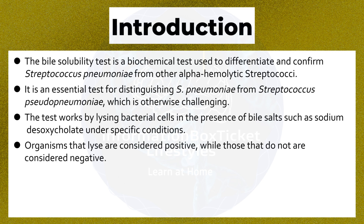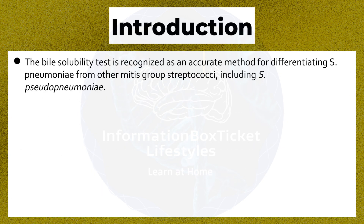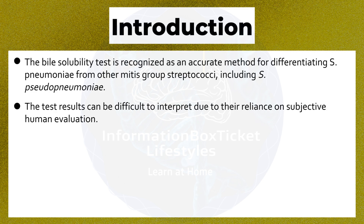Organisms that lyse are considered positive, while those that do not are considered negative. The exact mechanism of the test is not clearly understood, but it is hypothesized that lysis occurs due to the induction of autolytic enzymes. The Bile Solubility Test is recognized as an accurate method for differentiating S. pneumoniae from other mitis group streptococci, including S. pseudopneumoniae. The test results can be difficult to interpret due to their reliance on subjective human evaluation.